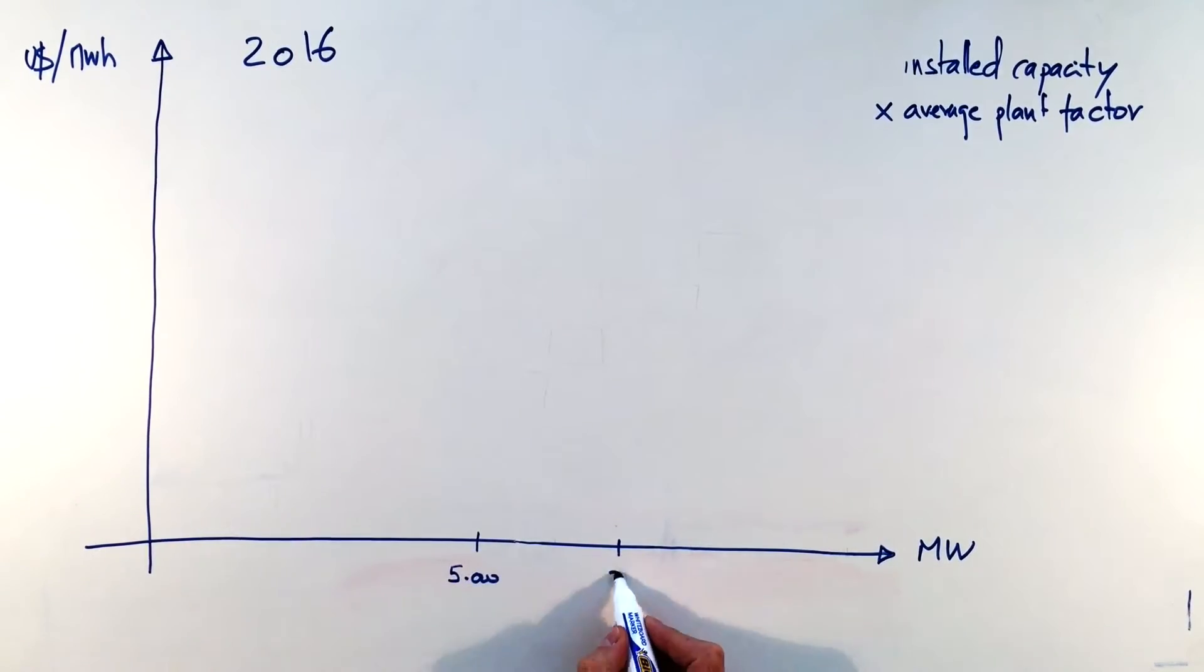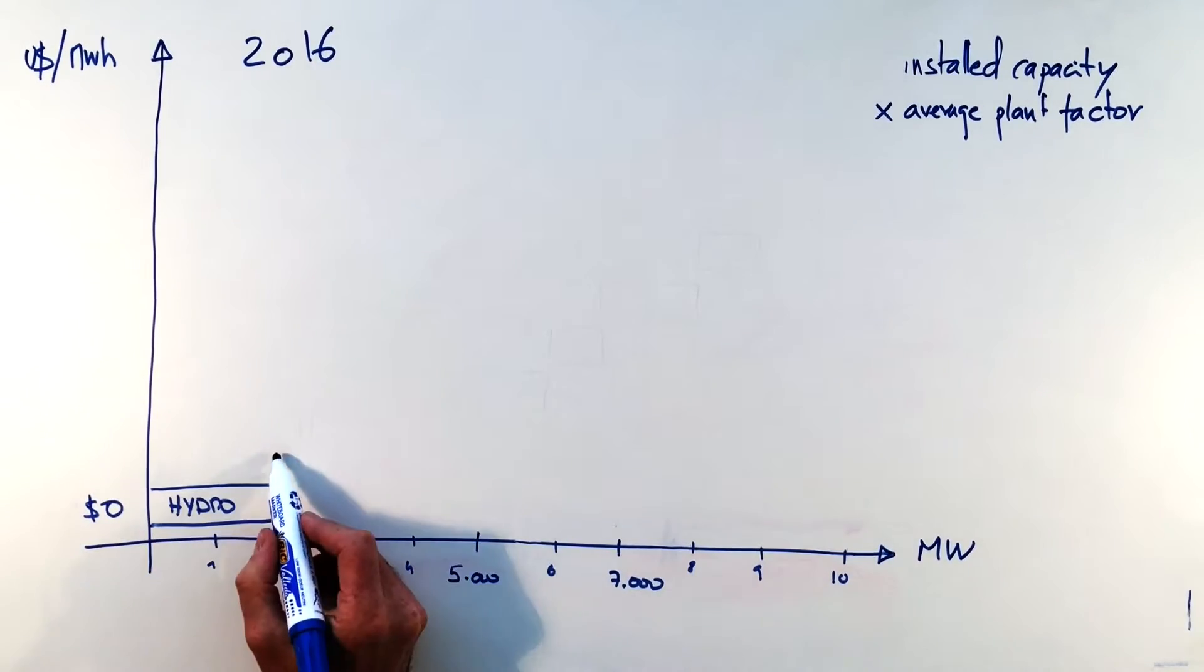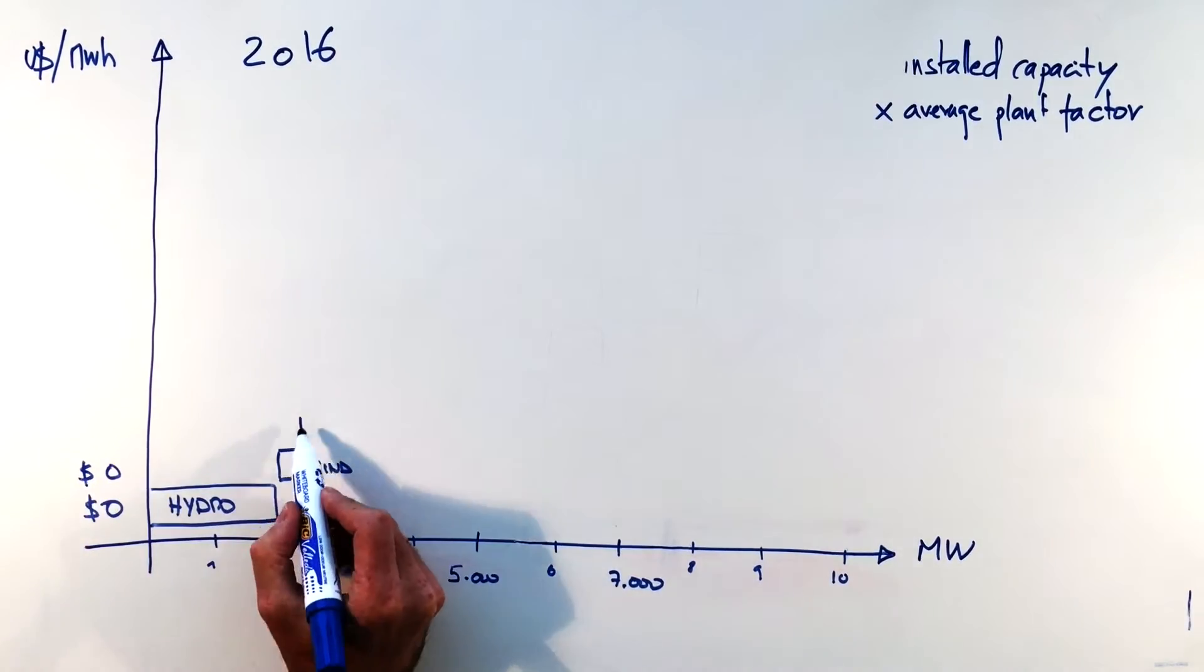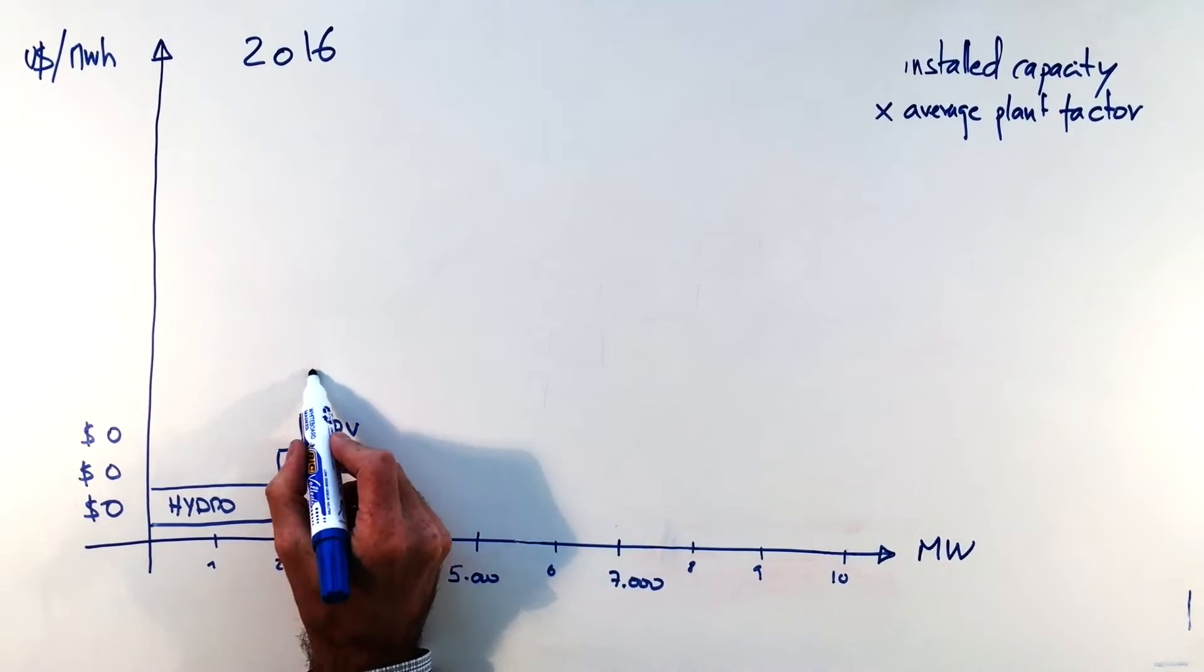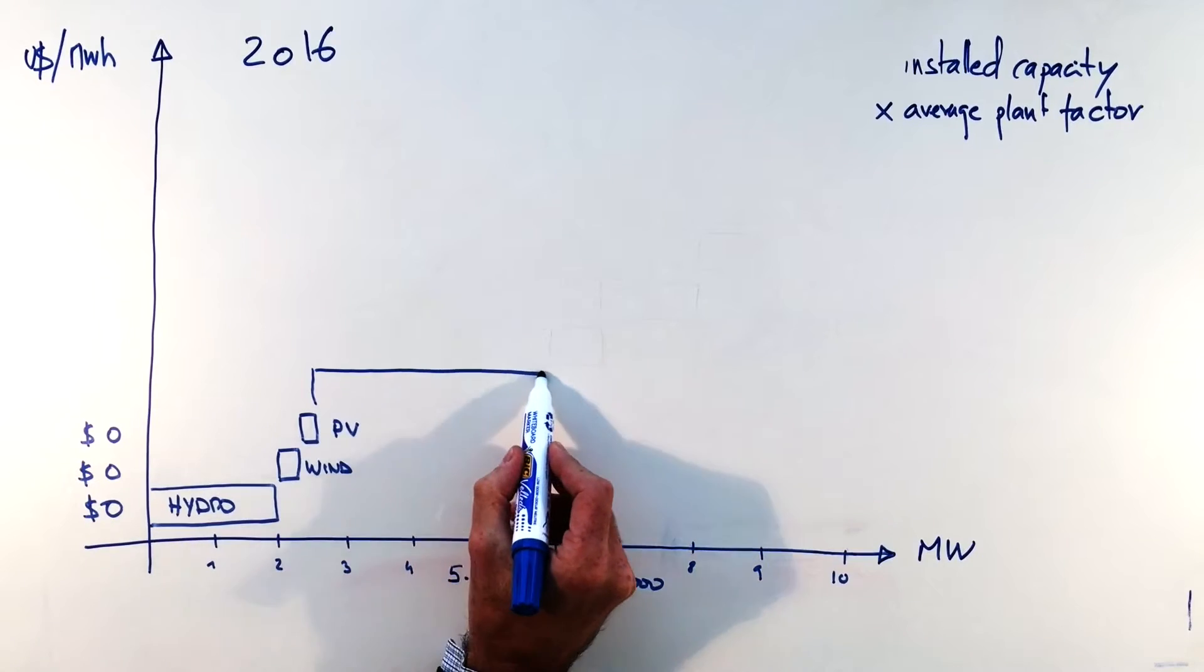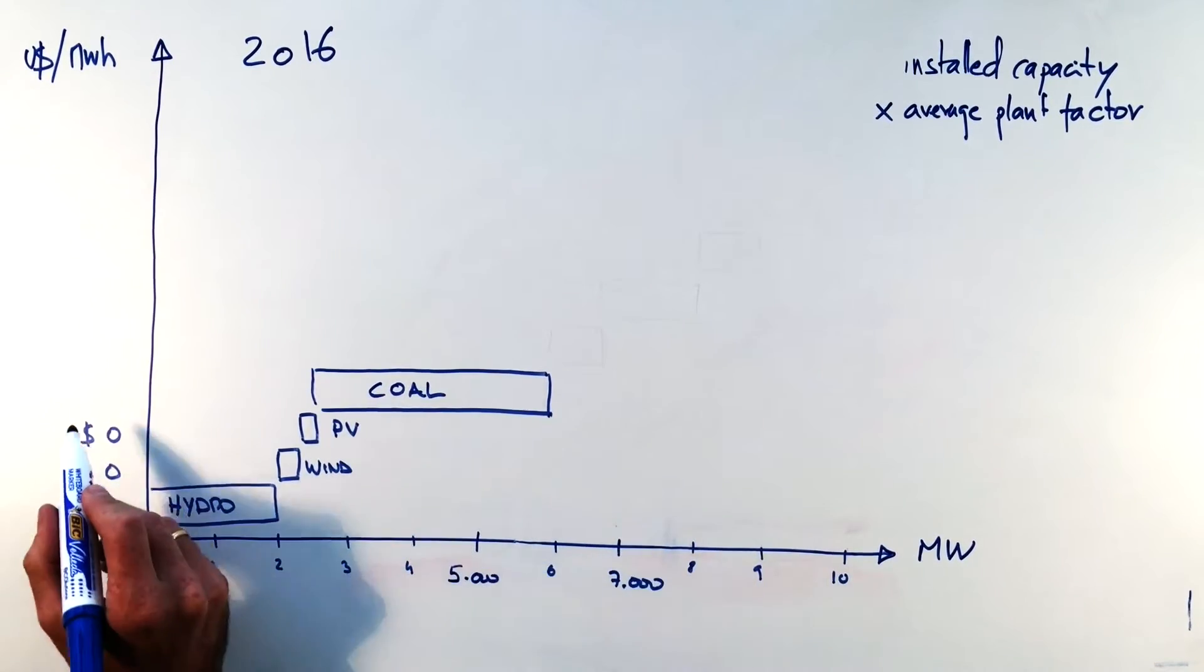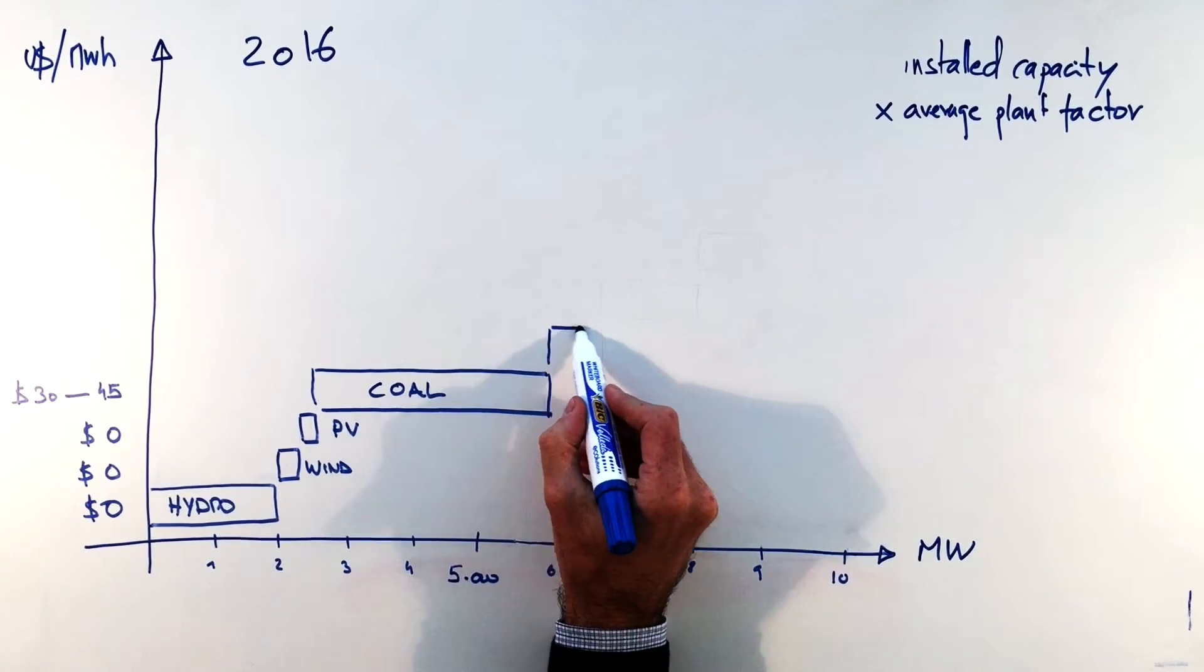So first 2016 demand is between 5,000 and 7,000 and supply is first served on a hydro base which is roughly 2,000 megawatts at zero marginal cost. Then comes wind 300 megawatts, PV 200 megawatts also at zero dollars per megawatt hour. Then we have a big base of coal which is roughly 3,000 megawatts at a variable cost oscillating between 30 and 45 currently.